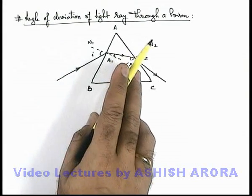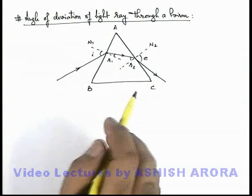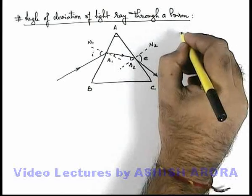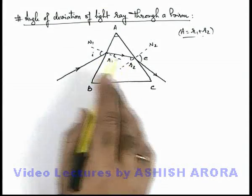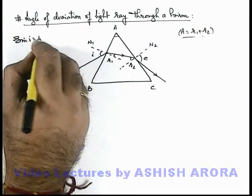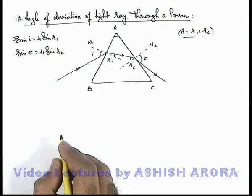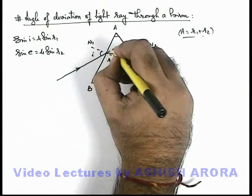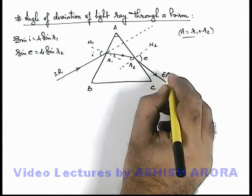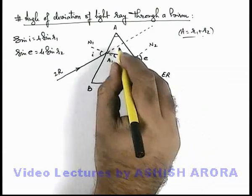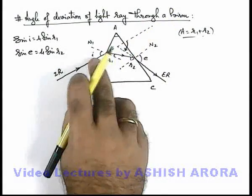Let us now study the angle of deviation of a light ray through a prism. This figure shows the propagation of light being refracted at the two refracting surfaces of the prism. If the prism angle is A, we already studied that A is equal to r1 plus r2. For the two surfaces where refraction takes place, by Snell's law we can write: sine i equals mu sine r1, and sine e equals mu sine r2. If the prism were not present, the light ray would continue in a straight direction. The emergent ray exits into air, and back-extending it shows the total angle by which the light ray is deviated from its initial direction due to refraction through the prism.